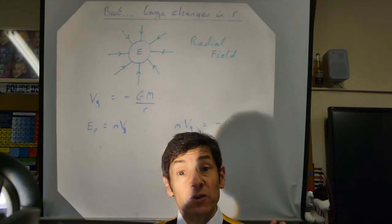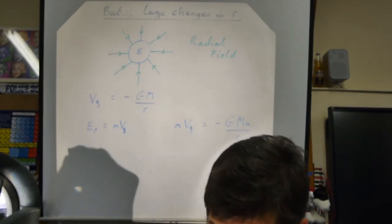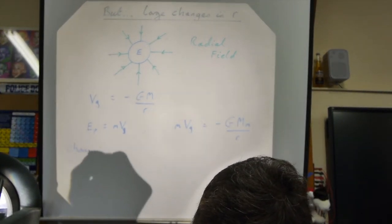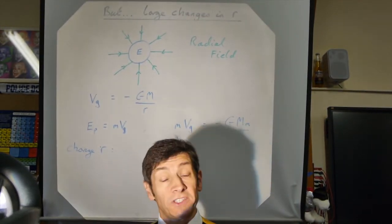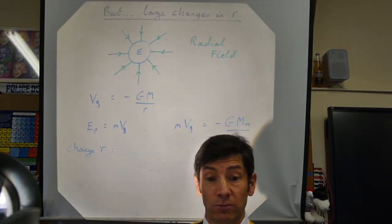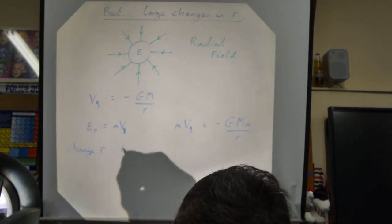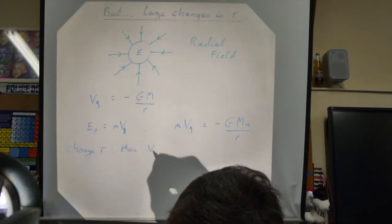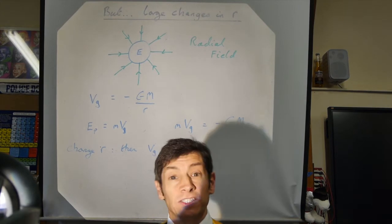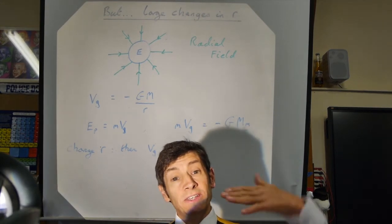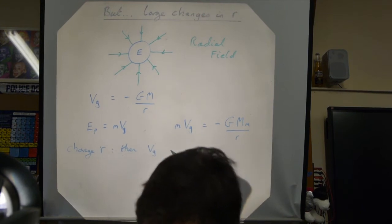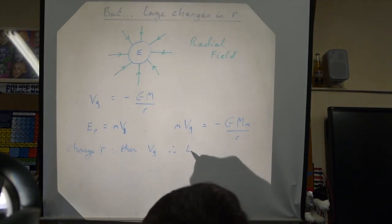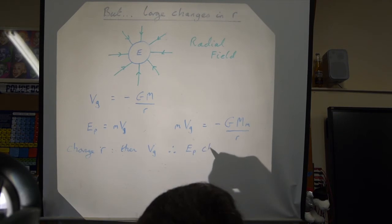If you change r — your separation from a gravitational mass — then V_g changes because you're at a different place in the gravitational field, and therefore your gravitational potential energy changes.